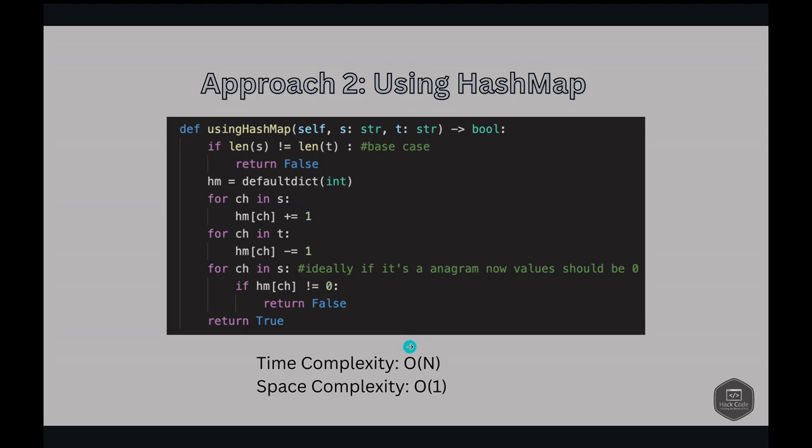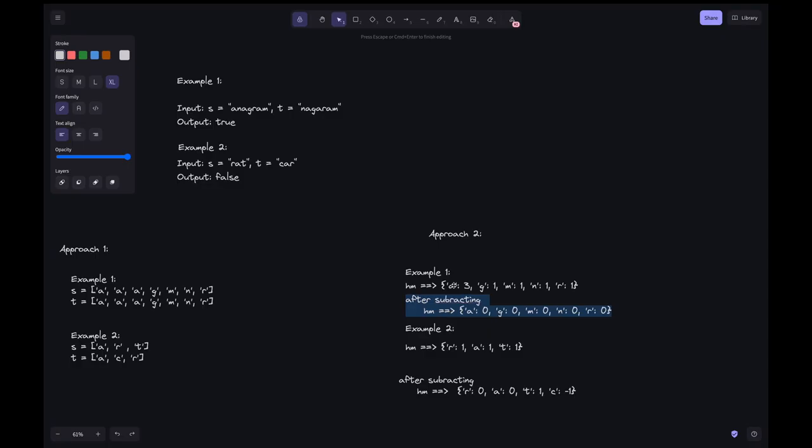The time complexity here is O(n) because we iterate over the length of the string twice. The space complexity is O(1) because at max we have 26 alphabet keys, and they clearly said the input is only lowercase alphabet characters. It's always a constant 26 keys we store, not varying on the input. It's always constant space, so it's O(1).